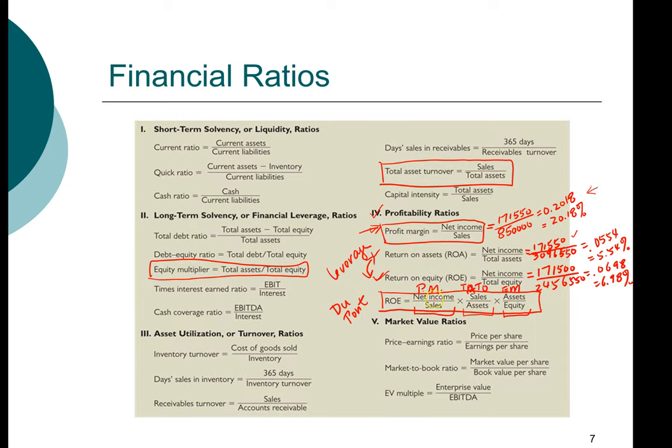And profit margin measures profitability. Total asset turnover measures efficiency. And equity multiplier measures the use of leverage. So by decomposing the ROE into these three factors, we can see whether or not return on equity was driven primarily by profitability, efficiency, or leverage.